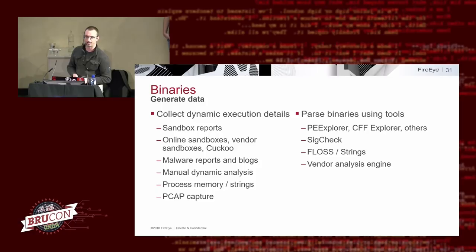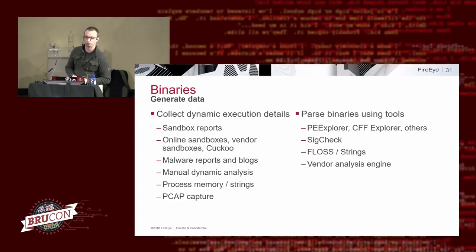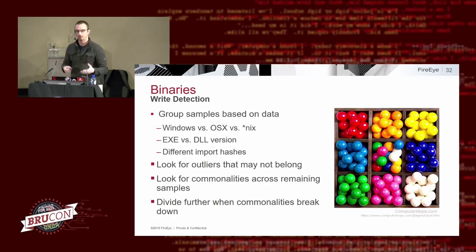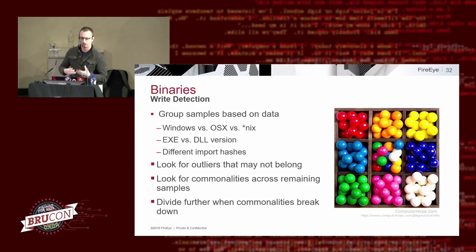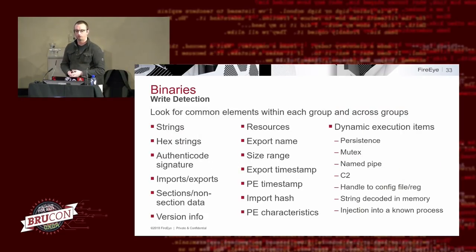Ideally get the exact output in the same format you'll use to match against — this gives highest fidelity when developing detections. Then group samples — with prolific malware families that have been around a long time there will be differences you can't always put into a single rule. Also look for outliers — even with high confidence sources there's a decent chance something shouldn't be there, so kick those out before getting too far down the road.